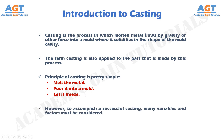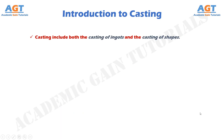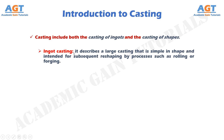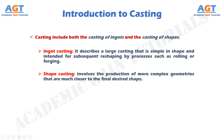However, to accomplish a successful casting, many variables and factors must be considered. Casting includes both the casting of ingots and the casting of shapes. Ingot casting describes a large casting that is simple in shape and intended for subsequent reshaping by processes such as rolling or forging. Shape casting involves the production of more complex geometries that are much closer to the final desired shape.